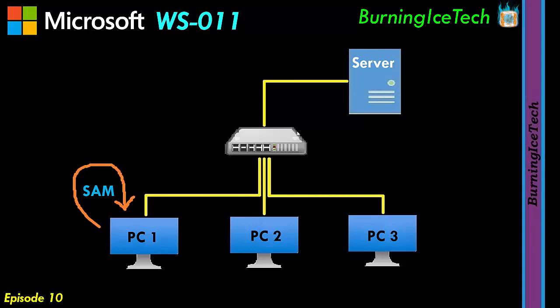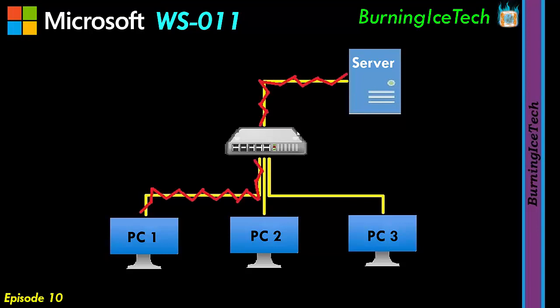What we want to achieve is having these machines joined to a domain. When that's the case, PC1 is no longer going to authenticate to itself. Instead, when you type in your username and password, PC1 will go through the network and contact your ADDS — your Active Directory server. That's essentially a much larger database containing the usernames and passwords for all machines in the organization. The server checks whether that account exists and whether the password matches, and if so, authentication occurs.